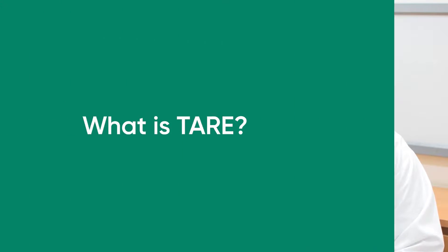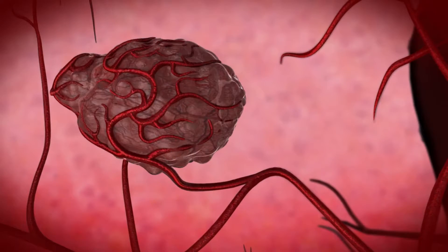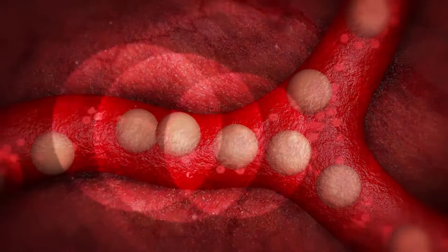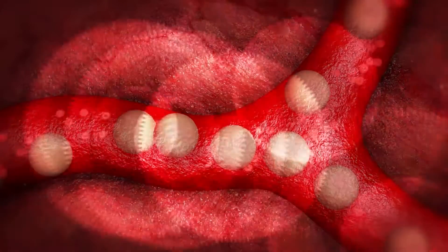One of those is TARE. What is TARE? TARE means trans-arterial radio embolization. That means one radioactive substance is injected into the liver tumor through the feeding vessels — that means the vessels which are supplying blood to the tumor — and that tumor gets local internal radiation and it gets destroyed.